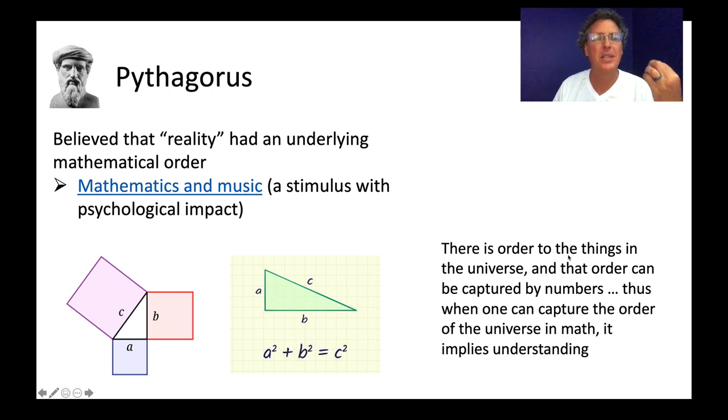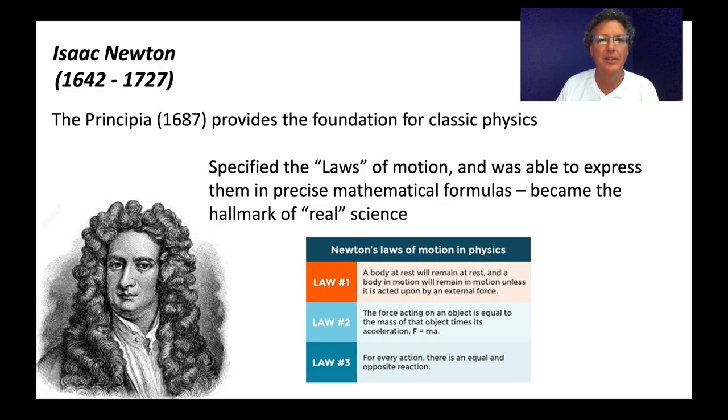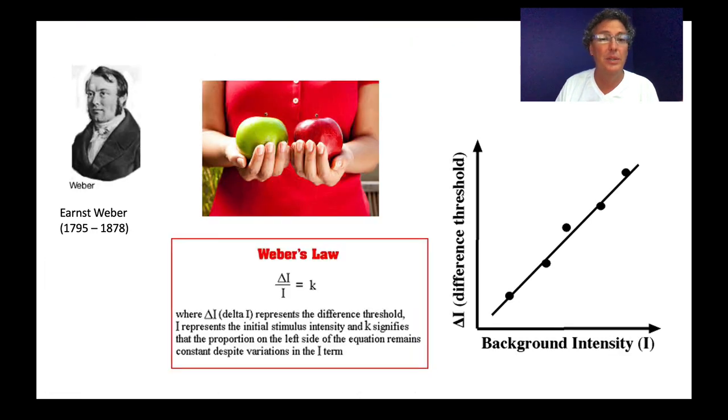There is an order to things in the universe and that order can be captured. There's an order to things in the universe, it seems like there's an order to things in our internal universe as well, and maybe we can capture that order with numbers. If we can, does that imply understanding? That's the cool thing with Weber.